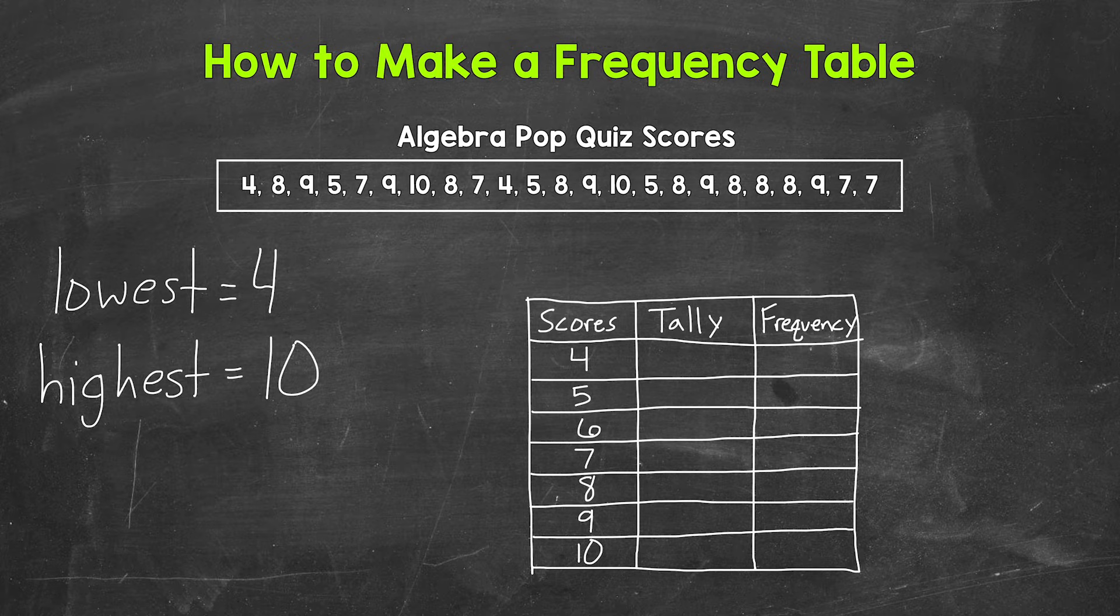Next, we need to work through our data and make a tally for each of the scores. And I'm going to just work from left to right, starting with four here. So we have four. And let's tally all of these.